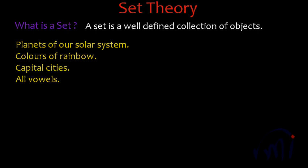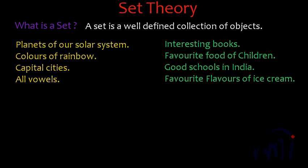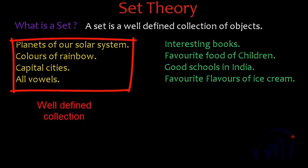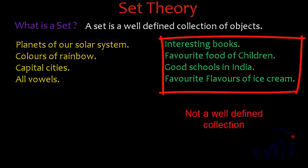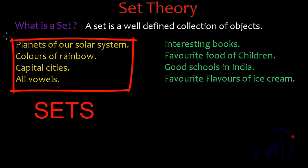These are a few examples of well-defined sets. And a few examples of not-so-well-defined collections: if I talk about interesting books, you may find some book interesting but I may not find that book so interesting, so it is not well-defined. Similarly, food items liked by children, good schools in India, and favorite flavors of ice cream — these also cannot be defined properly. The things written in yellow represent a well-defined collection of objects, while the things written in green vary person to person and cannot form a set.